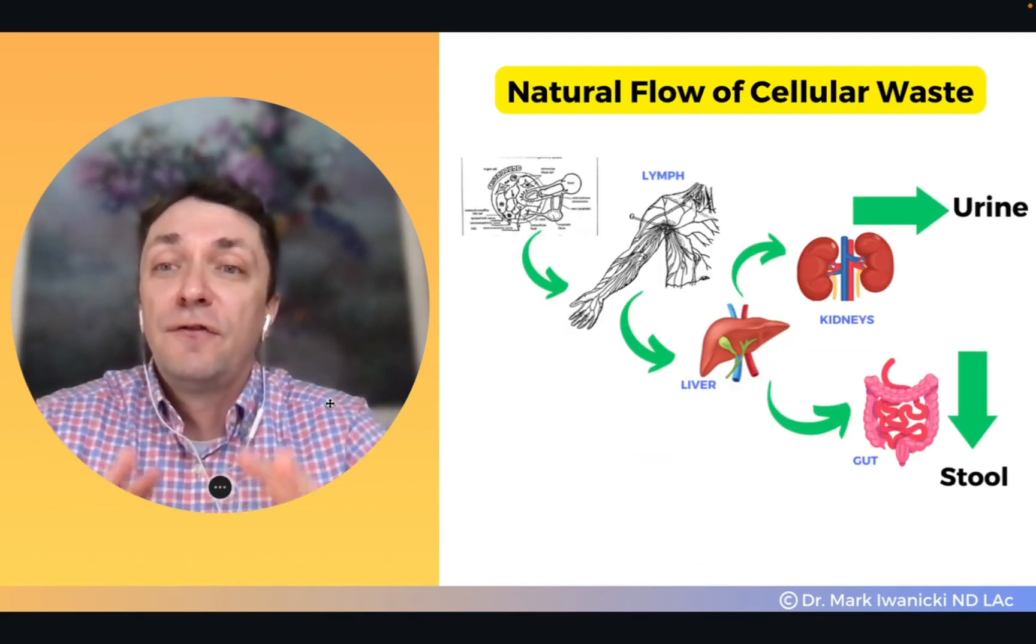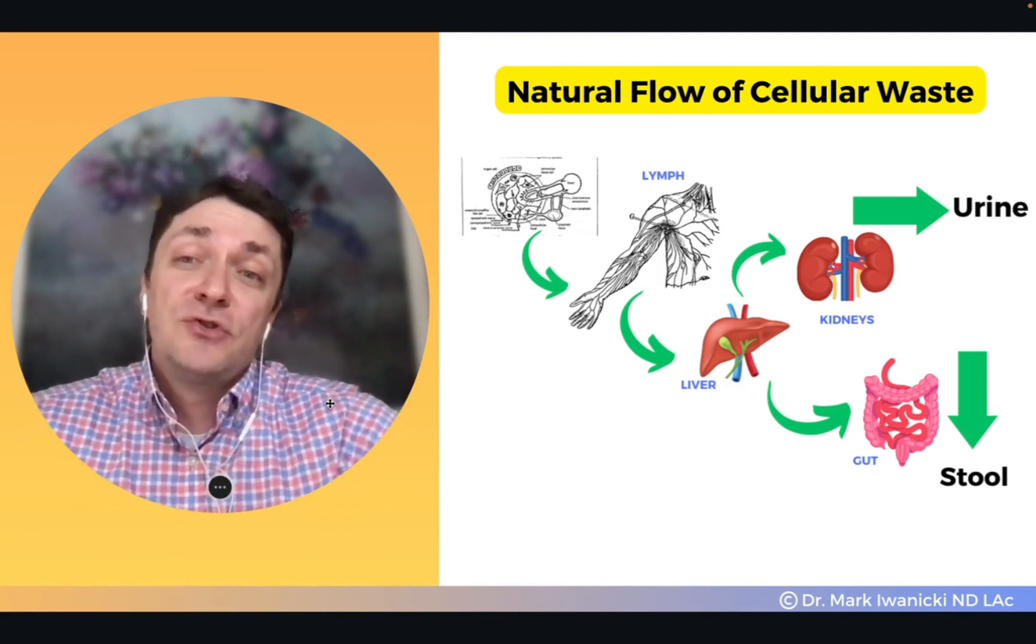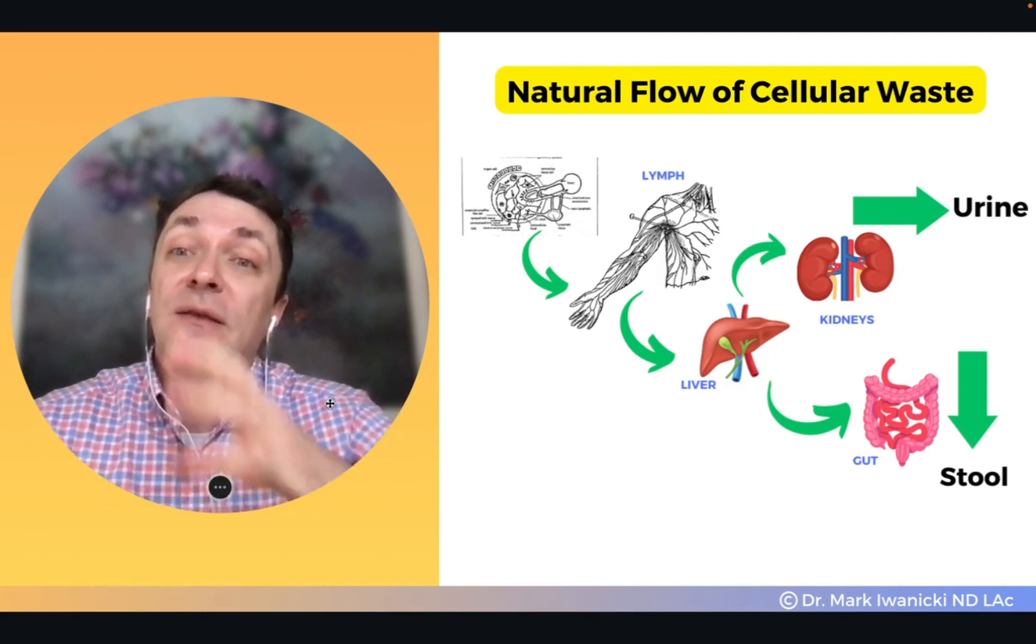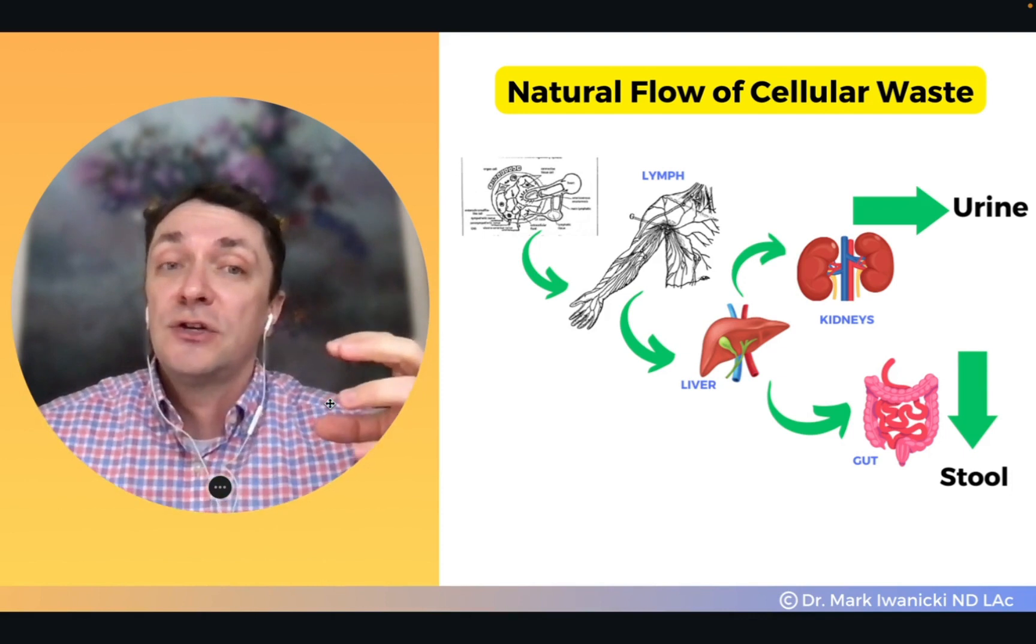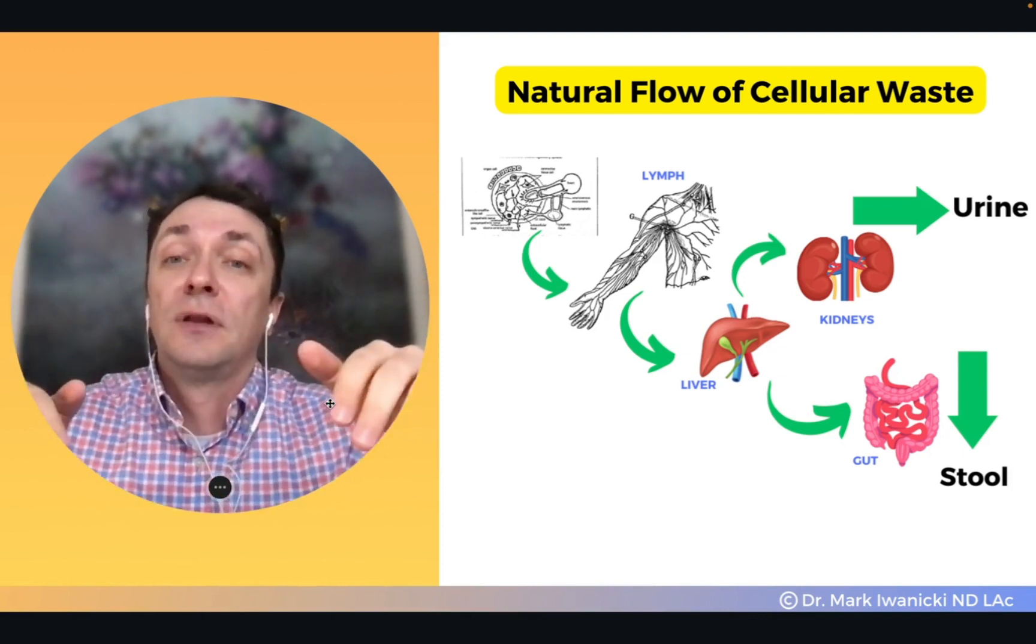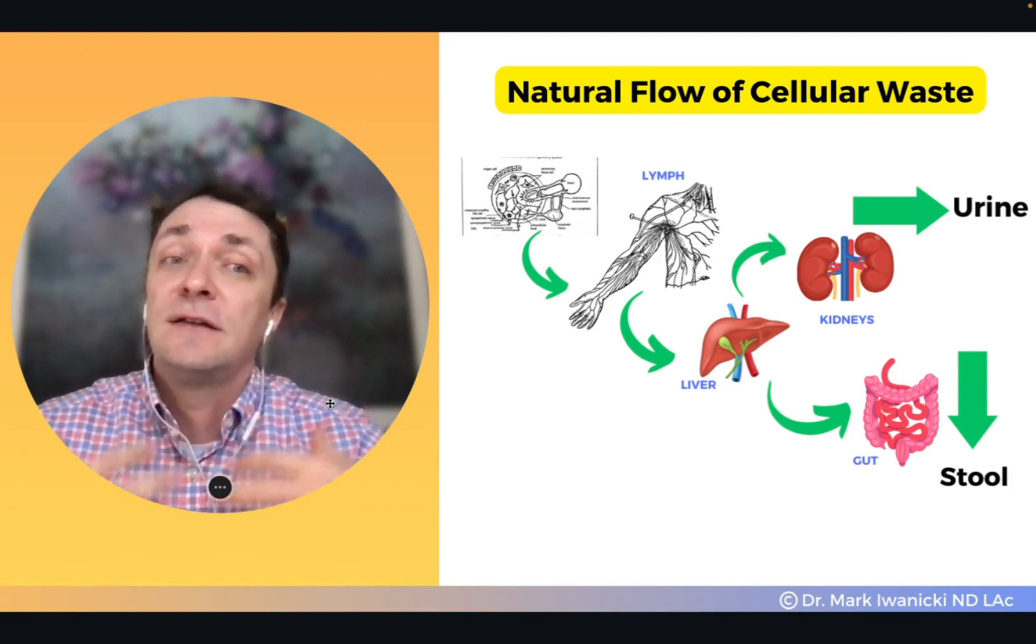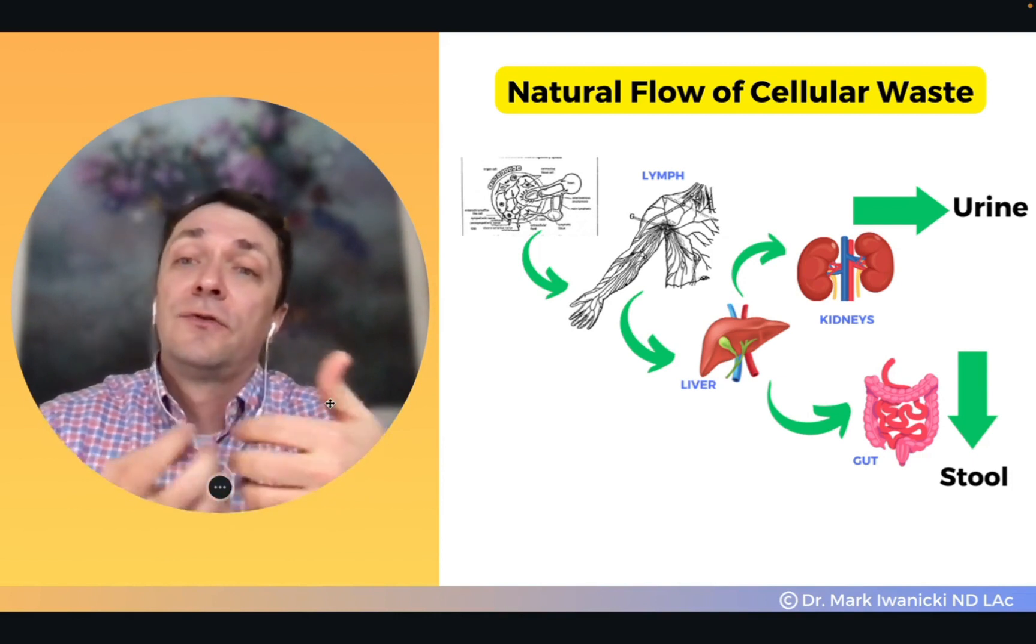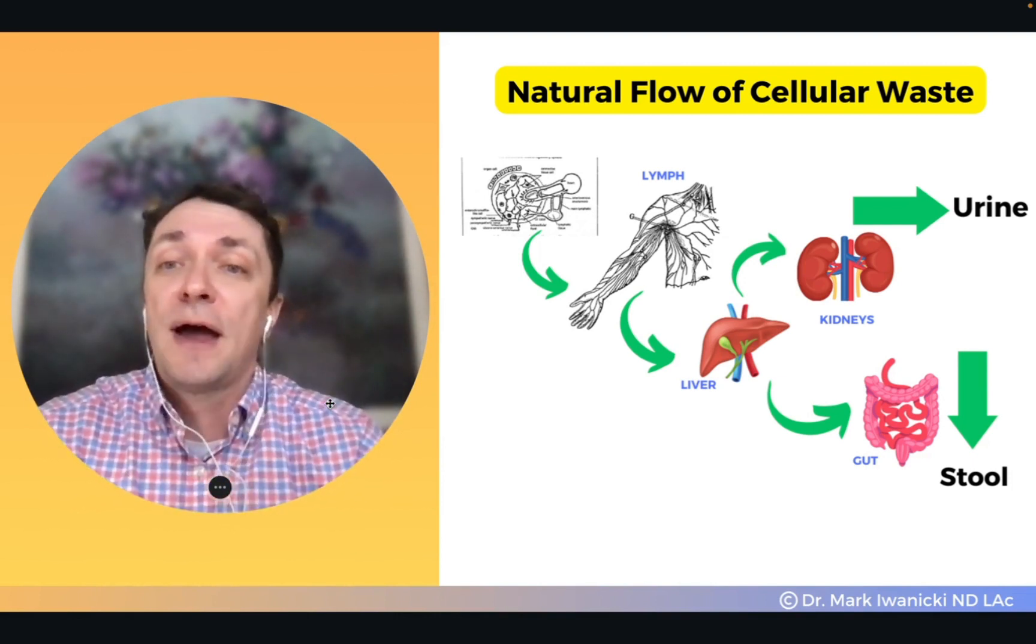You can think of the flow of this garbage as: cells excrete into the extracellular matrix, which collects this waste. The lymphatic system then draws out all this garbage into lymphatic circulation that gets dumped into regular blood circulation. The heart then pumps this into the liver for processing, into the kidneys for processing, out of the kidneys as urine, and out through bile and stool via the gut through the liver pathway.